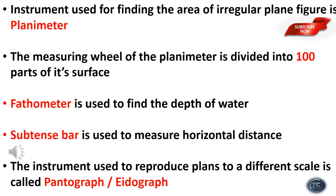The fathometer is used to find the depth of water. The subtense bar is used to measure horizontal distance. It is also called pantograph and ether graph.